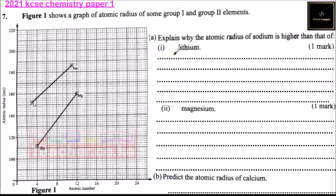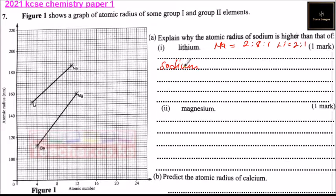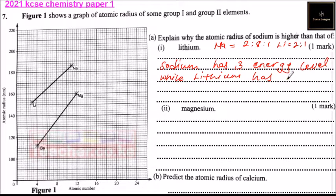Looking at the electron configuration, sodium has 2, 8, and 1 — so it has 3 energy shells. Lithium has 2 and 1 — so it has 2 energy shells. Sodium has 3 energy shells while lithium has 2, and that is why sodium has a higher atomic radius compared to lithium.